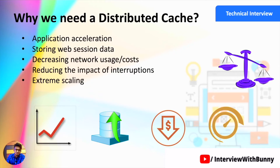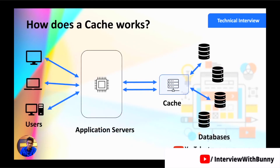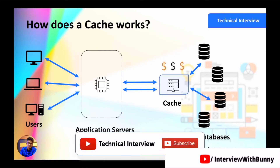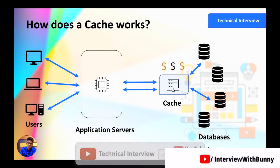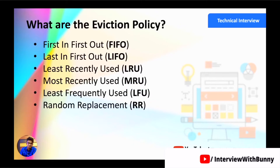You might wonder why we don't store all data in the distributed cache to make the application extremely fast. The reason is that cache memory is highly expensive compared to a normal database, which is why we use an external database server for storing large amounts of data. Since cache memory is limited, we need to decide what appropriate data to store — and for that, we use algorithms called cache eviction policies.